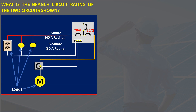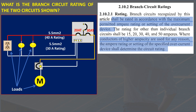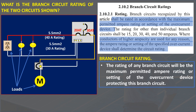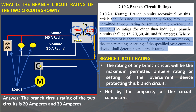What is the branch circuit rating of the two circuits shown? To determine the branch circuit rating, as per Section 2.10.2, branch circuits recognized by this article shall be rated in accordance with the maximum permitted ampere rating or setting of the overcurrent device. The rating for other than individual branch circuits shall be 15, 20, 30, 40, and 50 amperes. Where conductors of higher ampacity are used for any reason, the ampere rating or setting of the specified overcurrent device shall determine the circuit rating. Therefore, the rating of any branch circuit will be the maximum permitted ampere rating or setting of the overcurrent device protecting the branch circuit — not by the ampacity of the circuit conductors. The branch circuit rating of the two circuits is 20 amperes and 30 amperes.